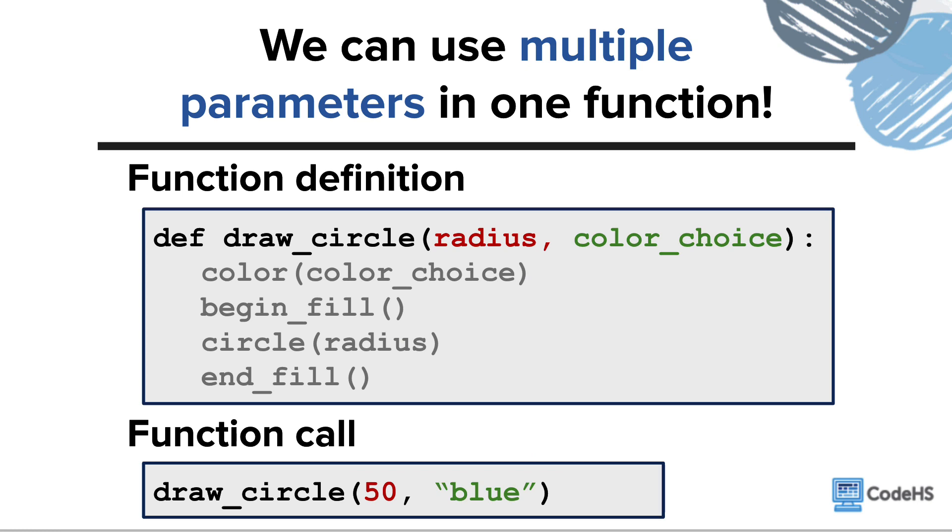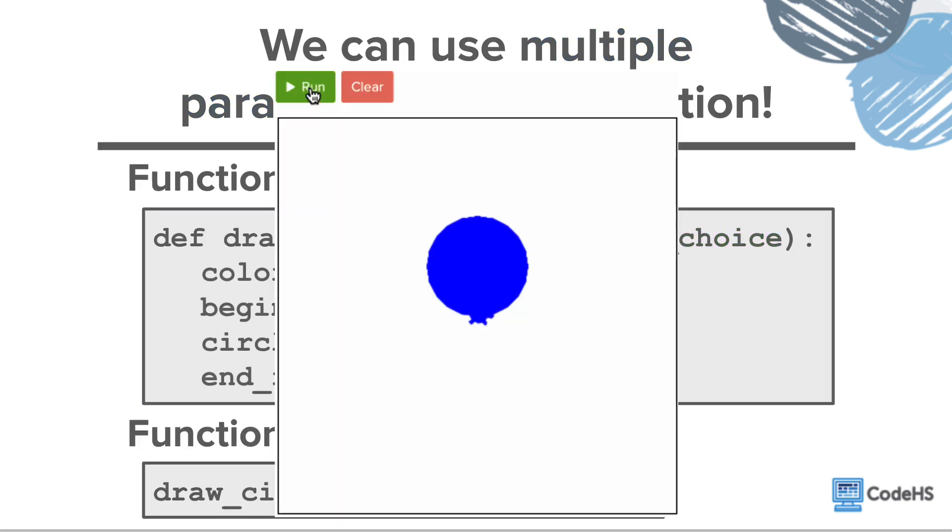Here, we are giving all of the correct information to the function in the correct order. So when we call this function, Tracy will draw a blue circle with a radius of 50, just as we wanted. We'll need to learn two more commands to help Tracy and Carol through the jellyfish forest.